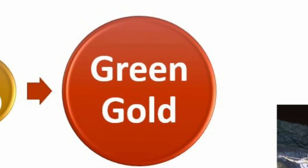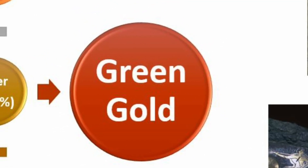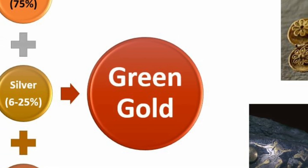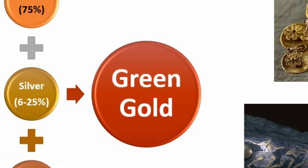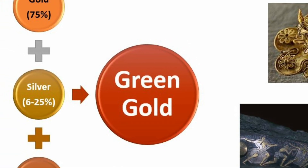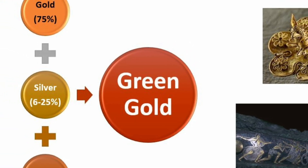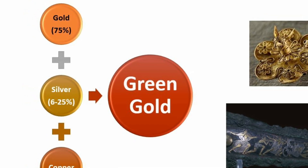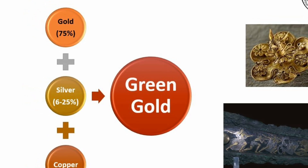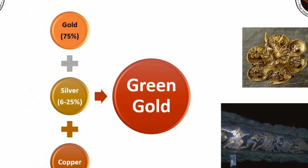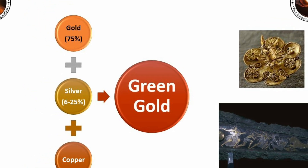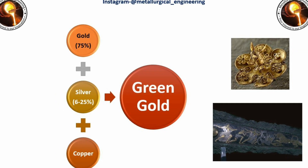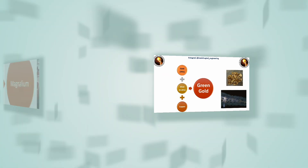Next is green gold, also known as electrum. It is a gold-based alloy and silver is the main alloying element. Other alloying element is copper. The composition of green gold is 75 percent gold and 6 to 25 percent silver. It is used in the core of Nobel Prize medals.